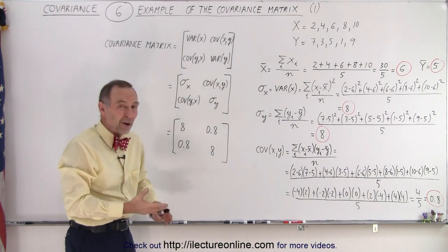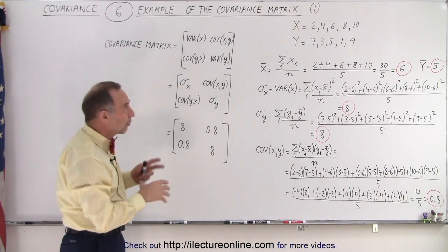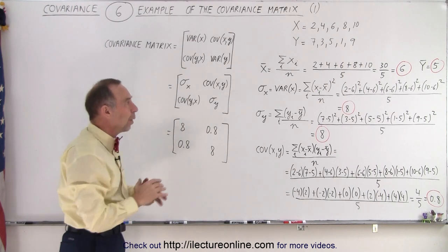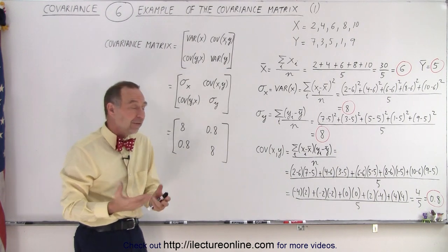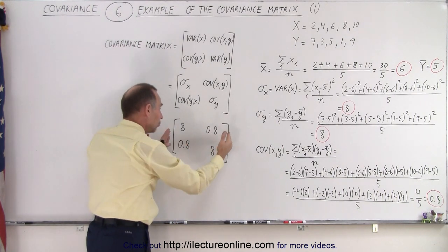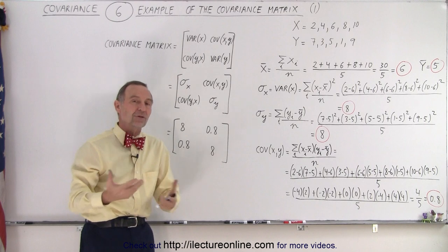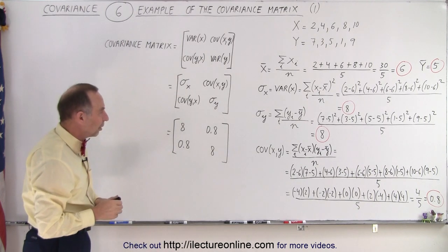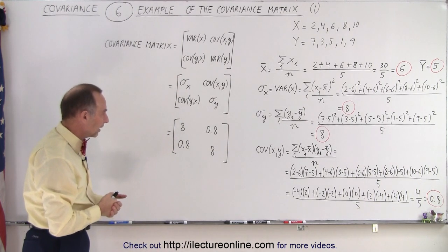0.8 is relatively small, so there doesn't seem to be much of a relationship between X and Y, and that's what that covariance represents. And of course, this is then placed into a matrix so we can do matrix applications with it in certain kinds of tracking algorithms and things like that.